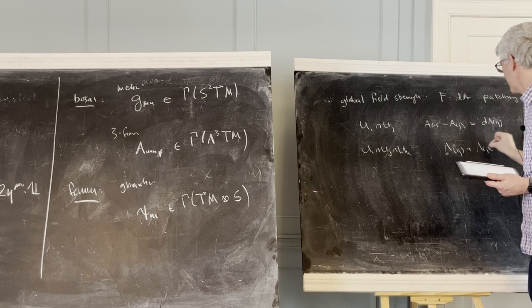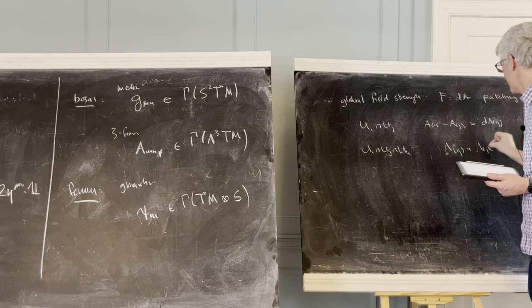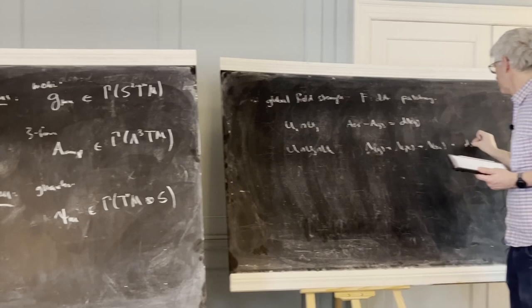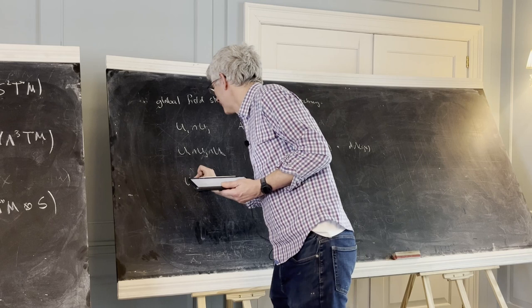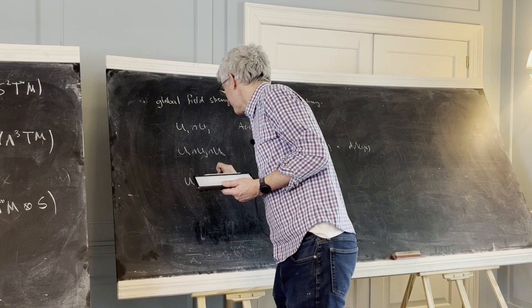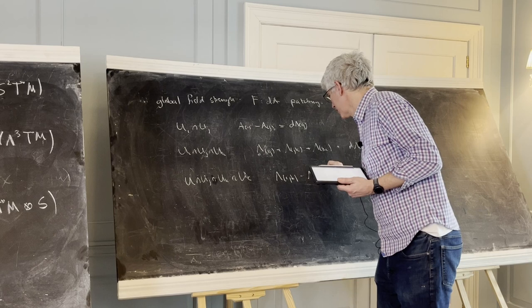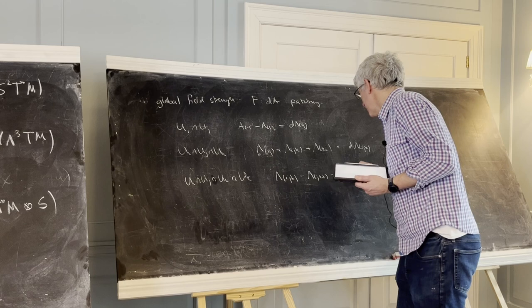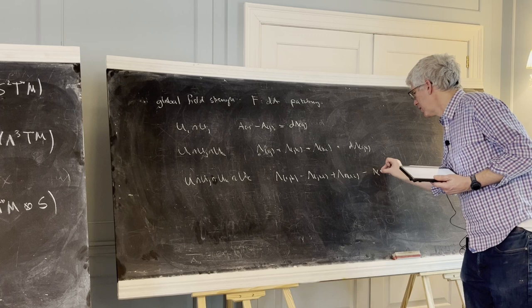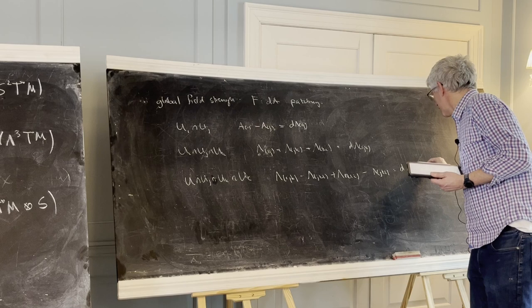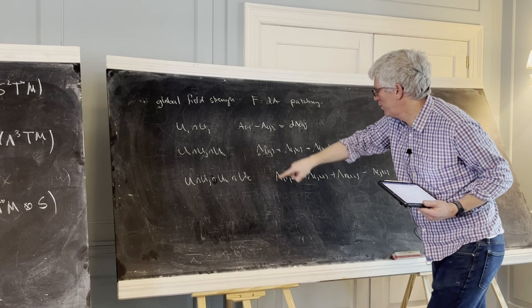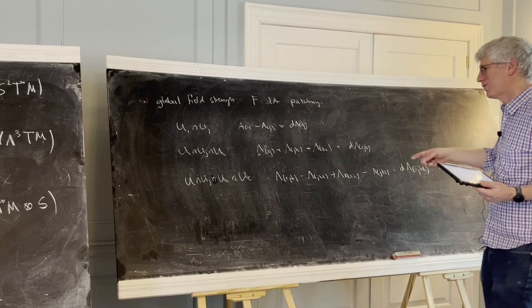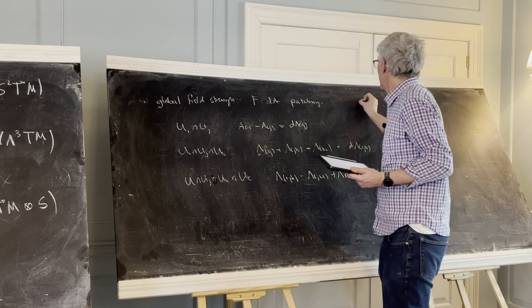On the triple overlap, these guys are related to each other by some further transformation by a one-form — it's sort of gauge transformations for gauge transformations. On the quadruple overlap, there's some relation for these guys by scalars. Three-forms, two-forms, one-forms — this is finally a scalar — and then there's some consistency on quintic overlaps. This structure is what mathematicians call a gerbe. And in the same way as a U(1) bundle, this structure can quantize the field strength, in the same way that for a U(1) bundle the magnetic flux is quantized. So this structure ends up making the field strength quantized — that just counts the number of branes that source it.